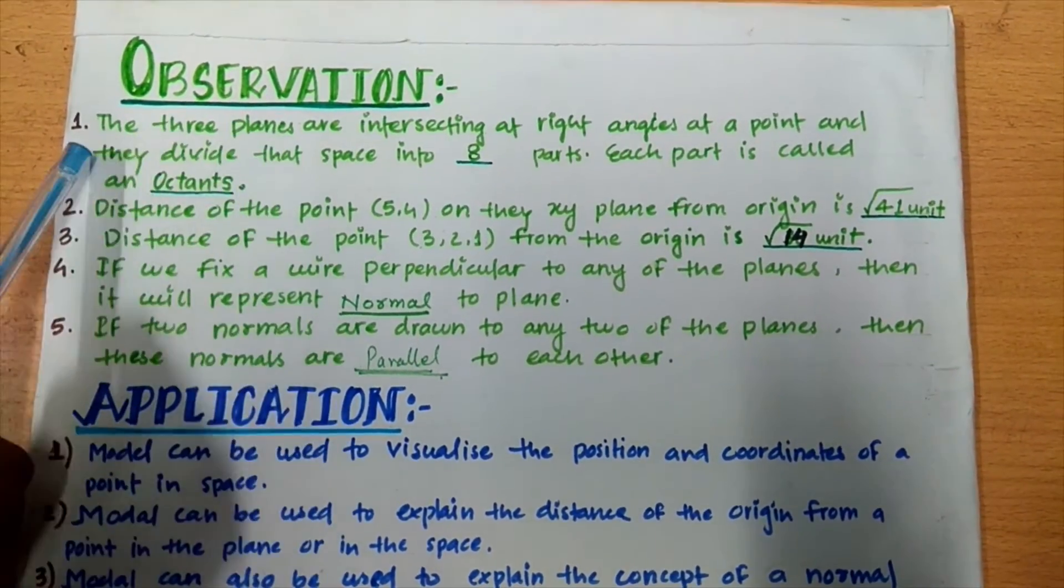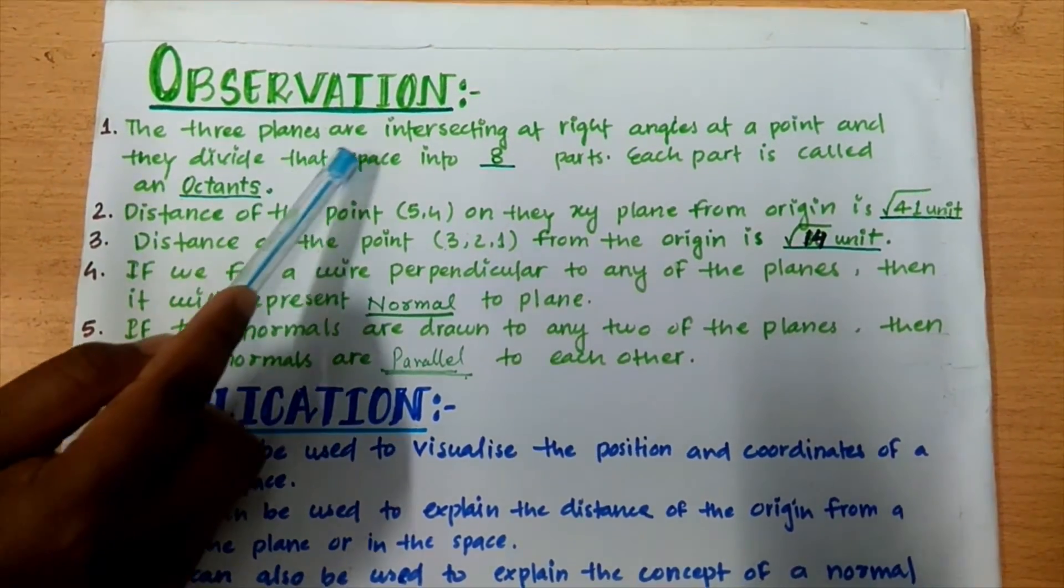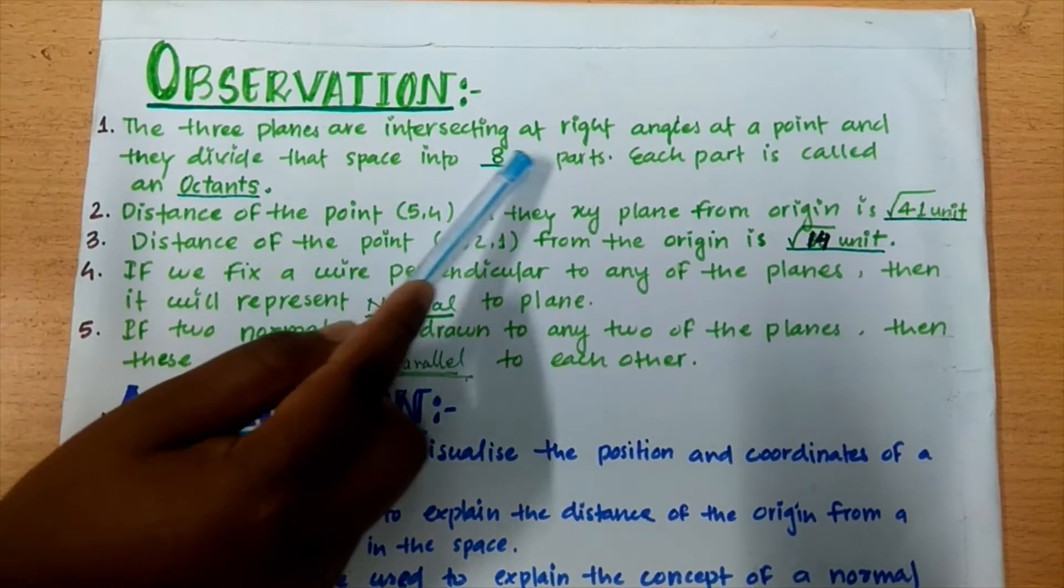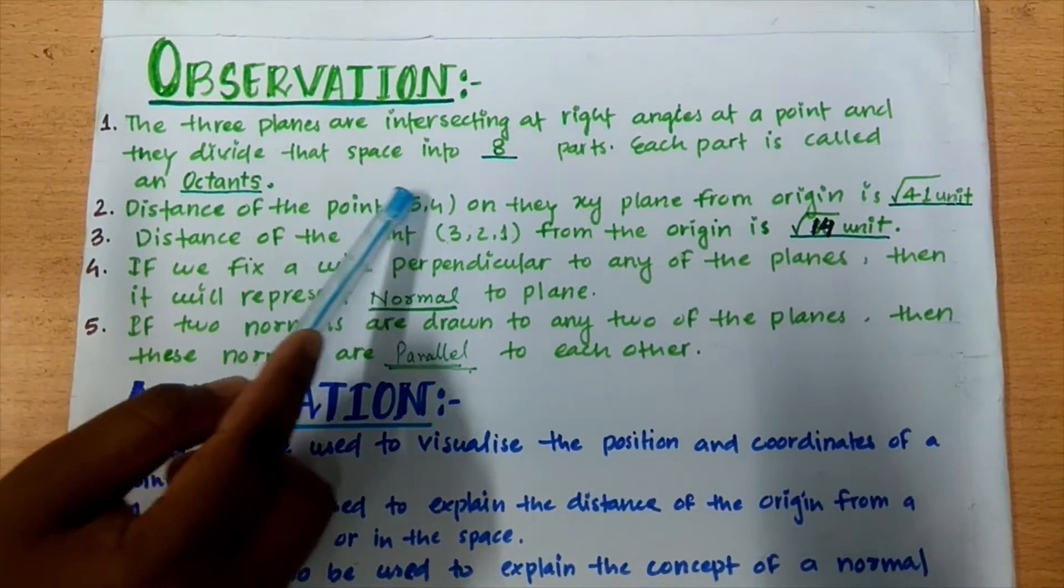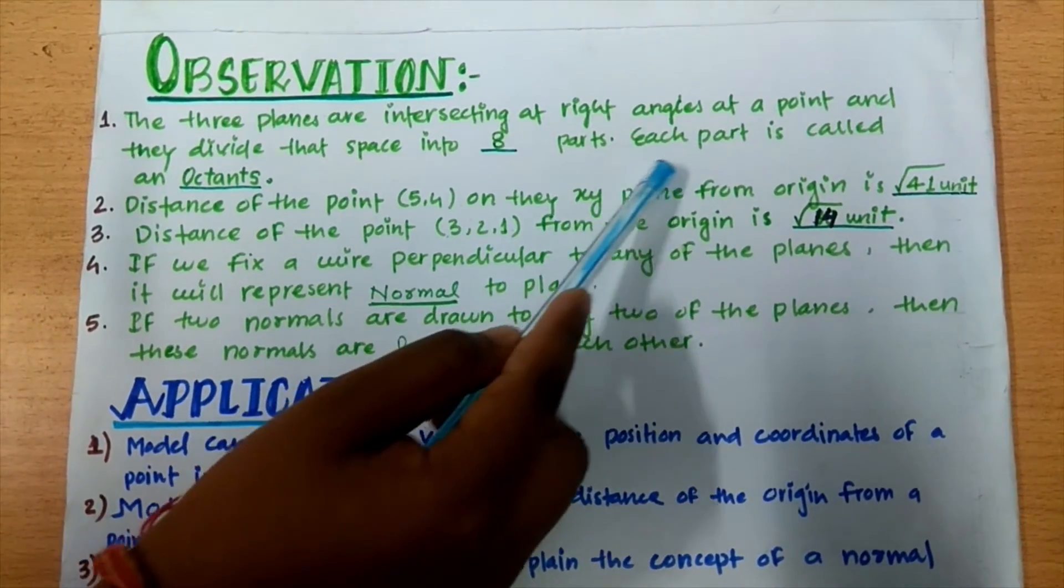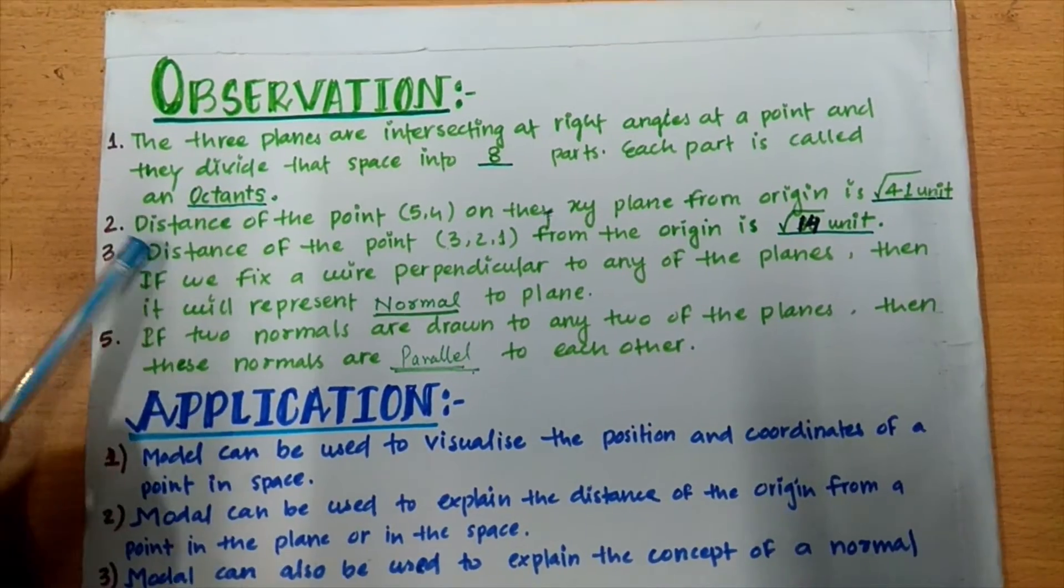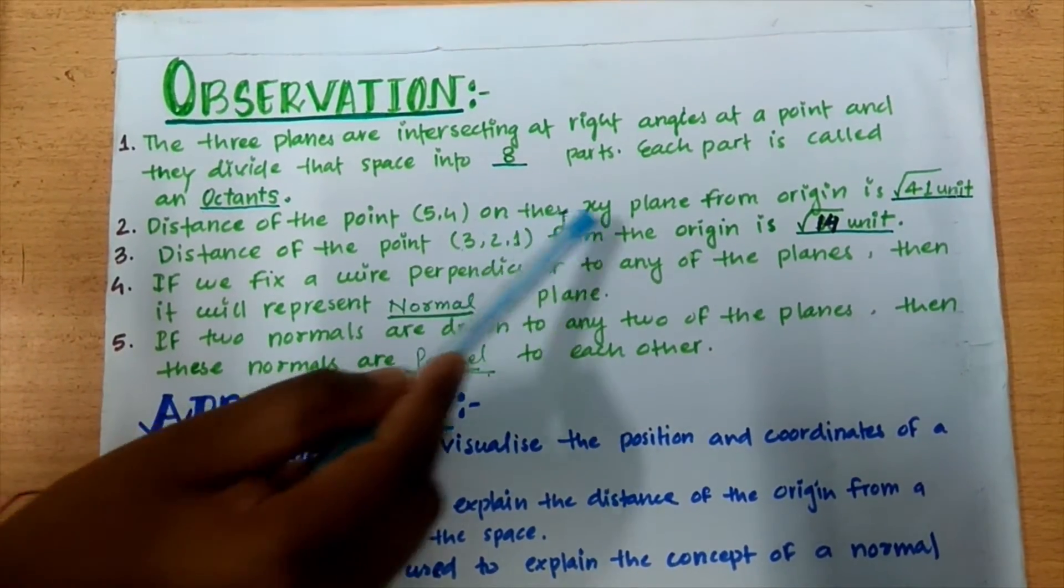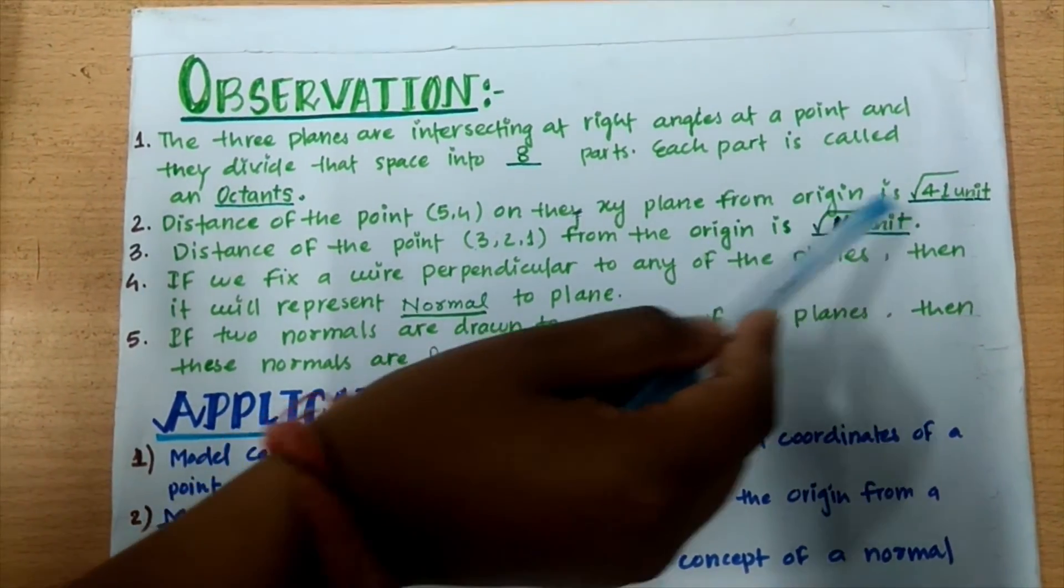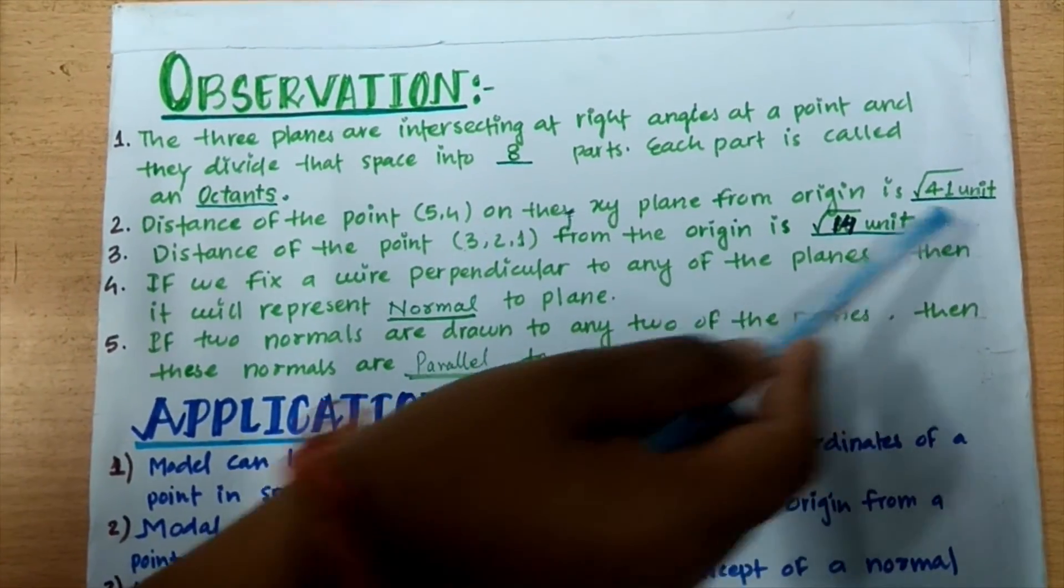Observation of this activity. The three planes are intersect at right angle at a point and they divide that space into eight parts. Each part is called an octant. Distance of the point 54 on the XY plane from origin is under root 41 units.